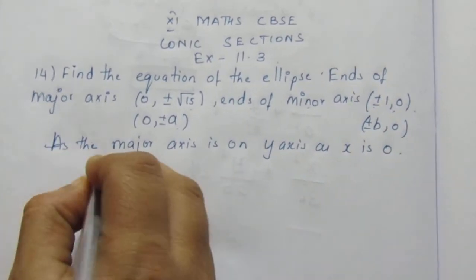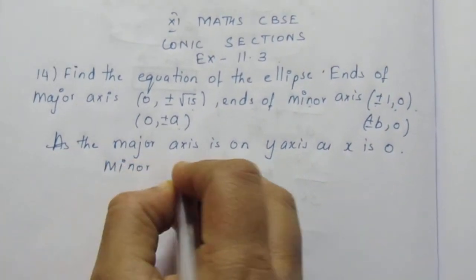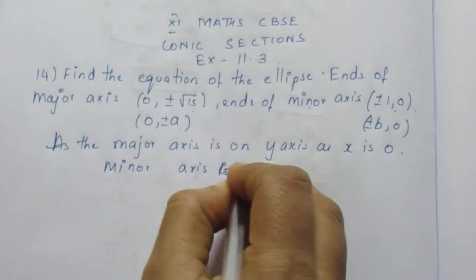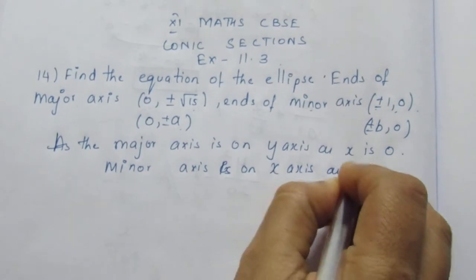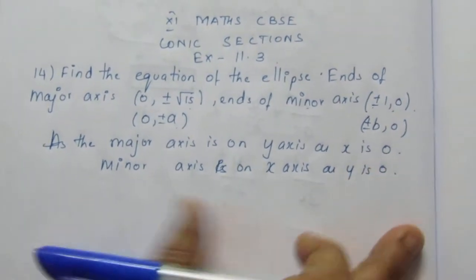Same way, minor axis is along the x-axis since y is 0 in the minor axis.